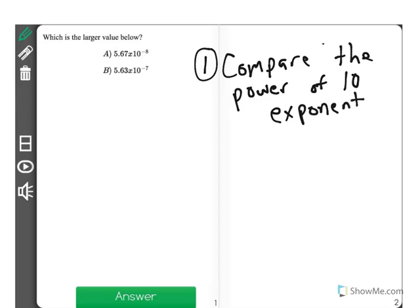So let's look. A has negative 8, B has negative 7. I know that negative 7 is greater than negative 8. I don't even have to compare anymore to tell you that B is larger here.